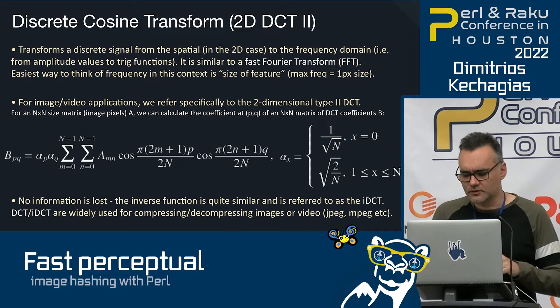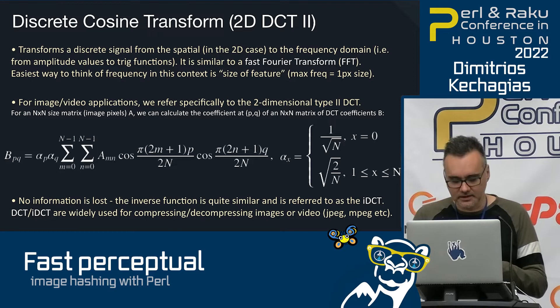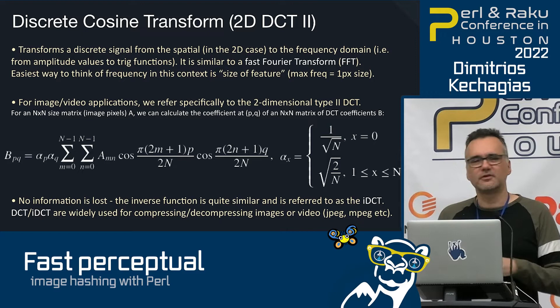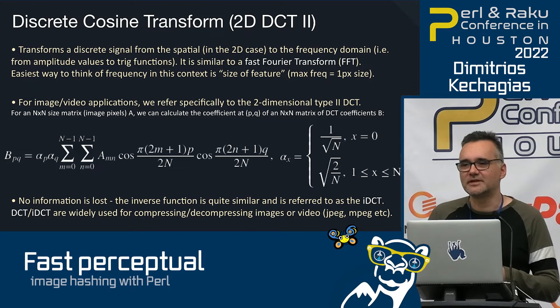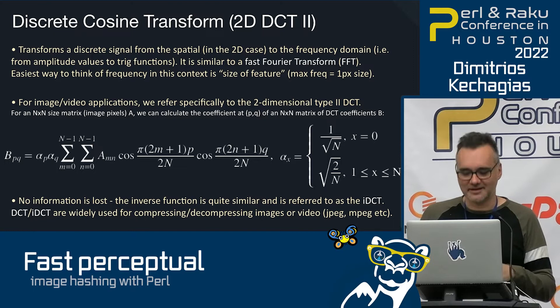DCT and inverse DCT are widely used for compressing and decompressing video. If you're old enough, you might remember from the 90s needing a graphics card with hardware IDCT — like an ATI or S3 — to play DVD video on a Pentium 2.